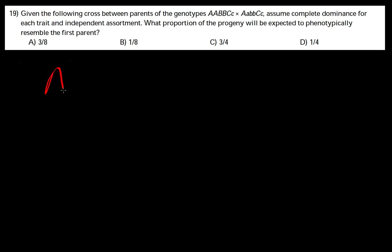The first parent is homozygous A and homozygous B and heterozygous for C. But phenotypically, A will give you dominant phenotype, B is also dominant, and C, even though it's heterozygous genotypically, phenotypically they're all dominant.